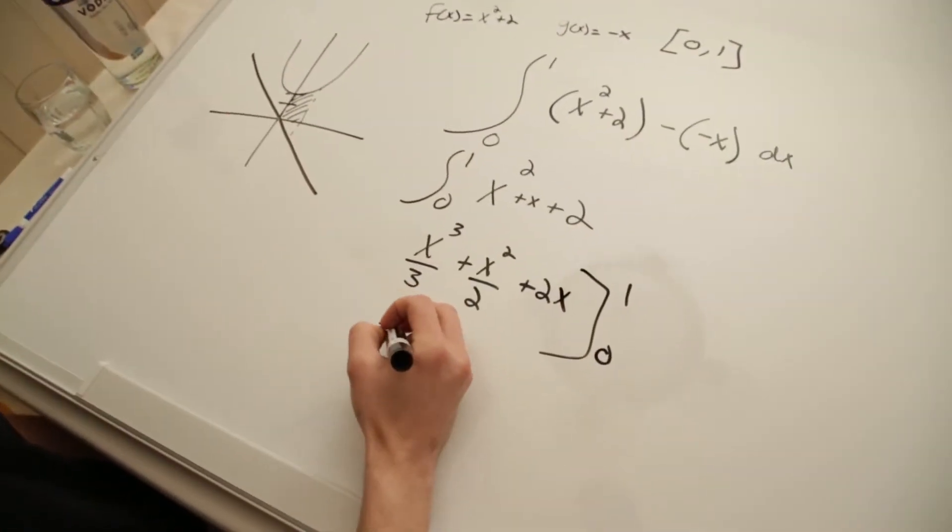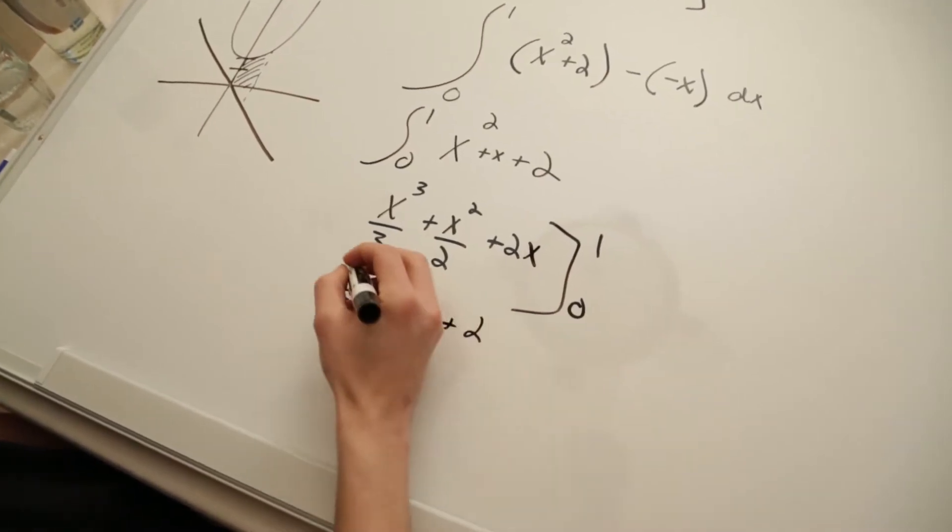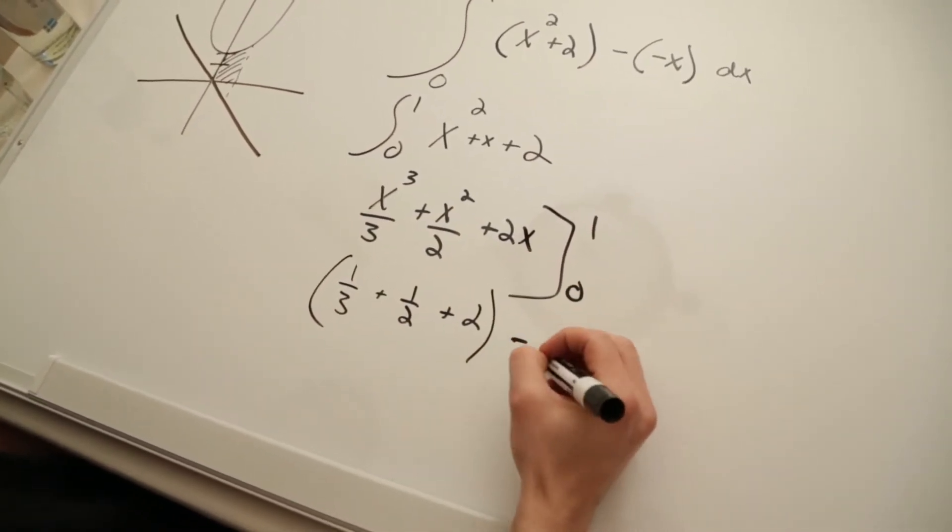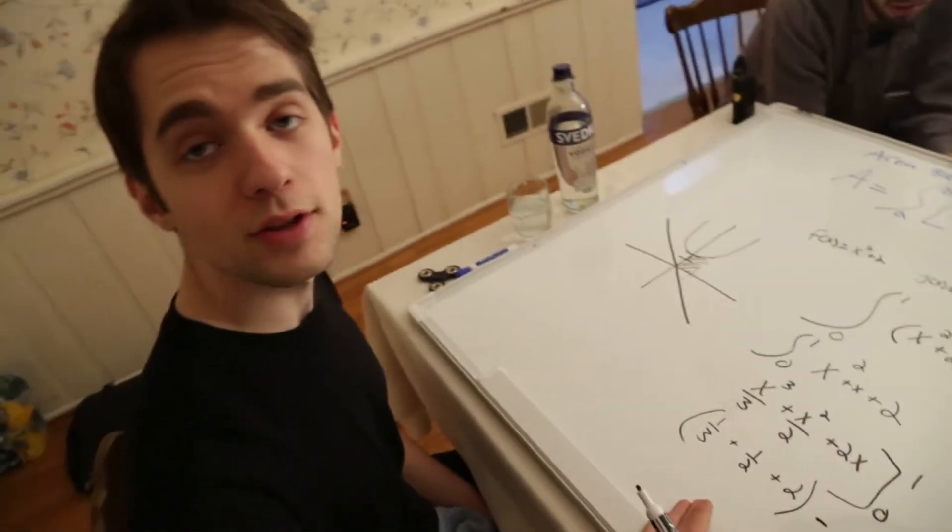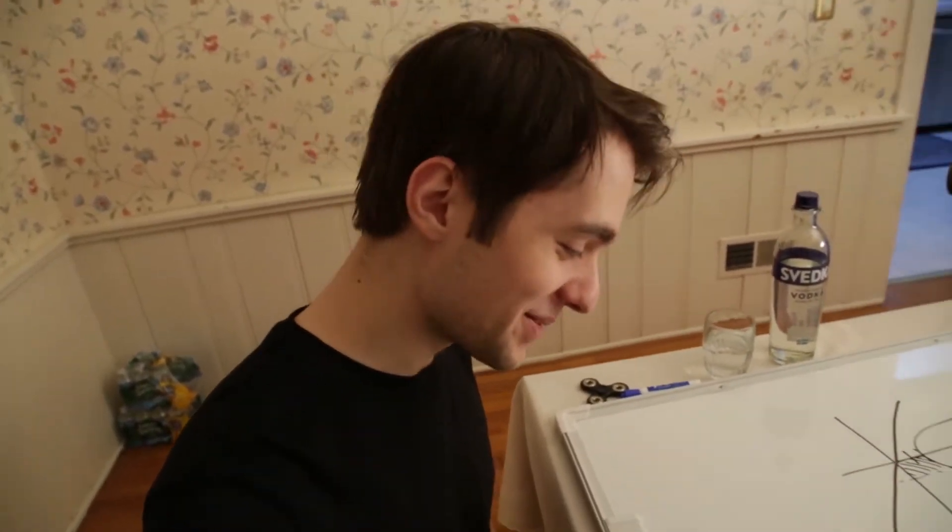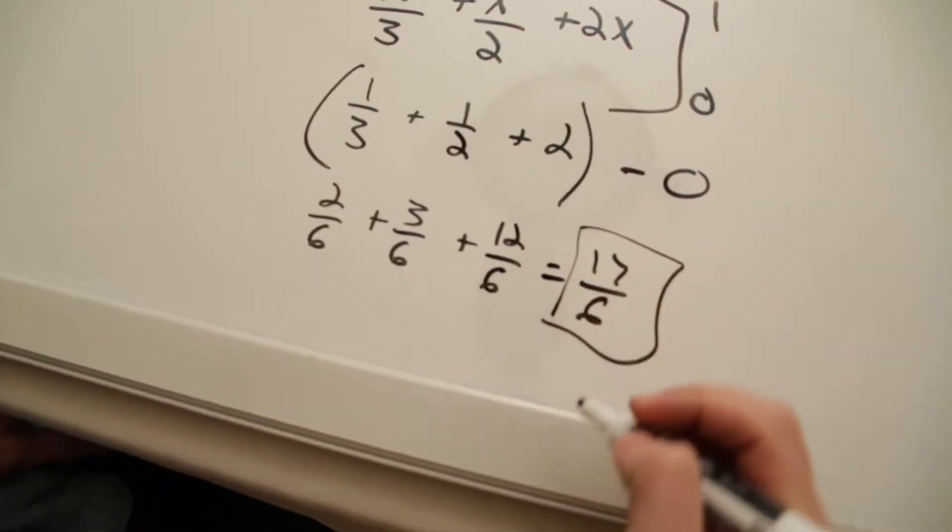So we'll have one third plus one half plus two. All of that minus all of these are going to be zero when you plug in zero. So minus zero. Do I have to do this part? Yes, please. All right. If you don't know how to add fractions, but let's just do it anyway. That's your answer.